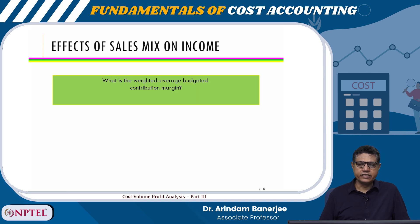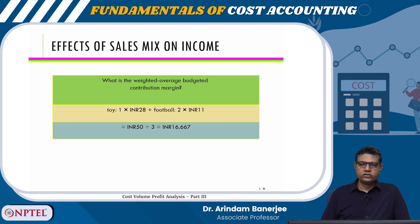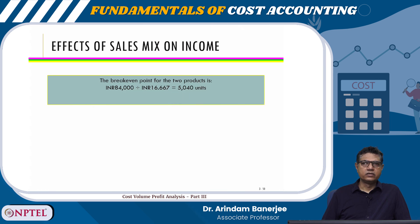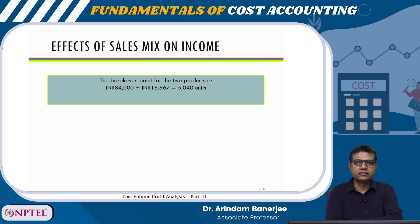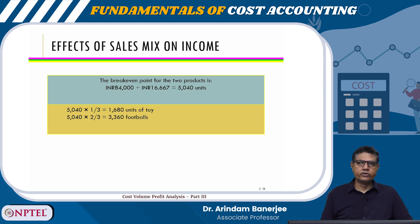The weighted average budgeted contribution margin is calculated as: toy 1 × ₹28 plus football 2 × ₹11, which equals ₹50 divided by 3, giving ₹16.667. The break-even point for the two products is ₹84,000 divided by ₹16.667, which equals 5,040 units — split into 5,040 × 1/3 = 1,680 units of toy and 5,040 × 2/3 = 3,360 footballs.